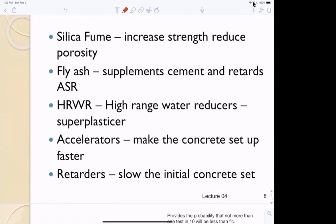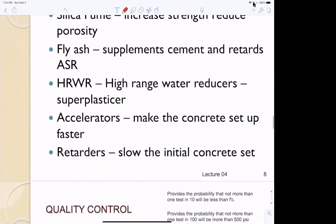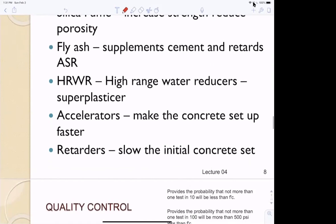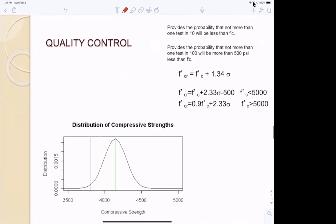It also stops alkali-silica reaction, makes it more flowable, and suppresses the early strength. High-range water reducer - if you're using a really low water to cement ratio, it's hard to mix the concrete. This allows you to mix the concrete. We use this in 3210. Accelerators can make the concrete set up faster, and retarders are the opposite - it slows the initial set.